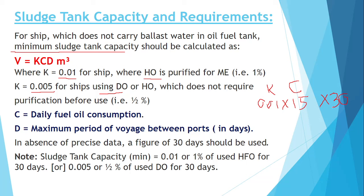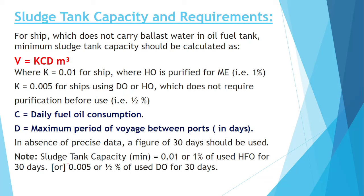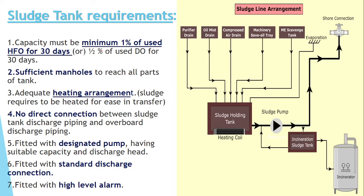Based on that formula, whatever value comes out will be your minimum sludge tank capacity requirement. That means you should have a sludge tank which is at minimum that value — you can have more, but you cannot have below that. So if the surveyor wants to ask a specific formula-based sludge tank capacity, then you say V = KCD. Otherwise, you say the 1% rule.